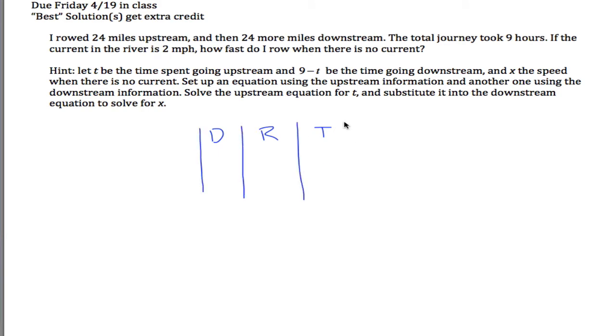What the problem is going to give us is information about rowing upstream and rowing downstream. So we'll have all this information for both upstream, which I'll put on this row, and downstream, which I can put on this row. And then if I go through and read it, it says I row 24 miles upstream, it seems like a distance for upstream, and then 24 more downstream.